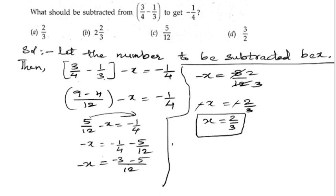Hence, 2/3 should be subtracted. So we know that what we need to subtract is 2/3, so the correct option is a.